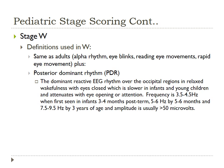For stage wake in pediatrics, the definitions are the same as adults — alpha rhythm, eye blinks, reading eye movements, and rapid eye movements. However, with kids, the EEG activity isn't always fully developed, so we use the term posterior dominant rhythm instead of alpha. The posterior dominant rhythm is the dominant reactive EEG rhythm over the occipital regions in relaxed wakefulness with eyes closed. It is slower in infants and young children and attenuates with eye opening or attention, with different frequencies listed for different age groups.